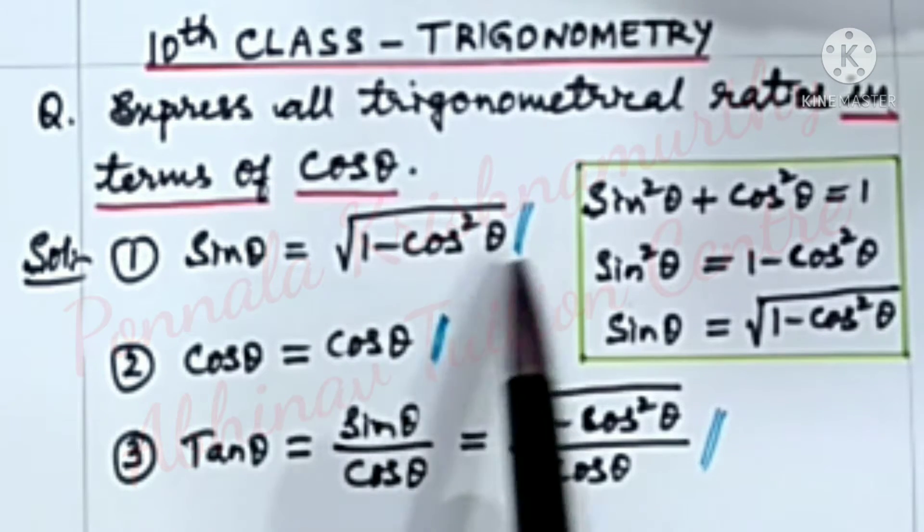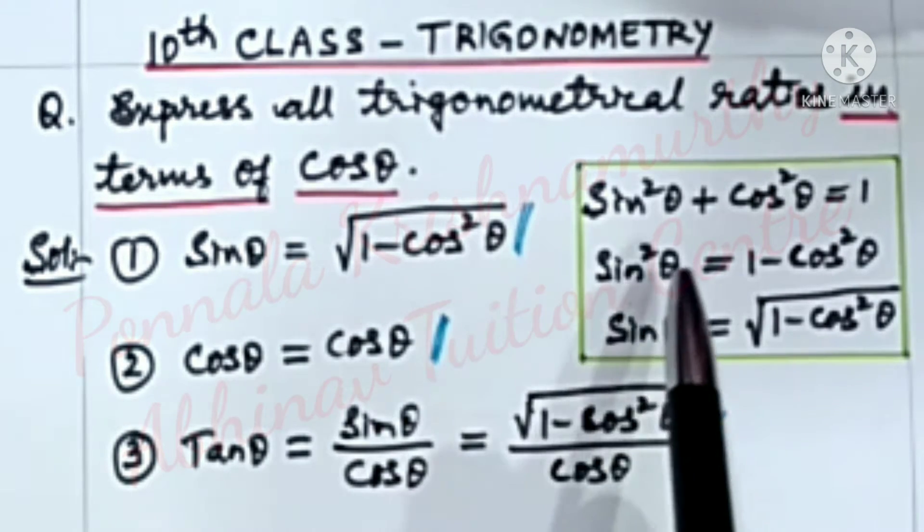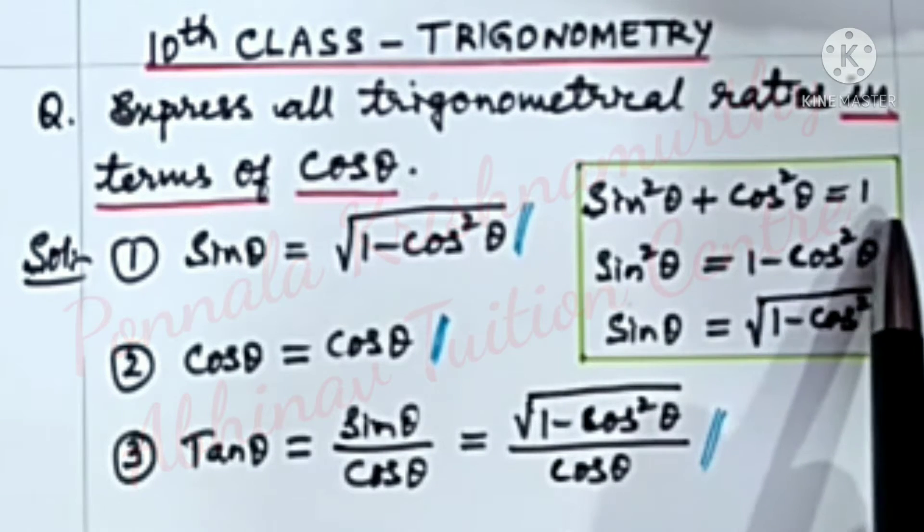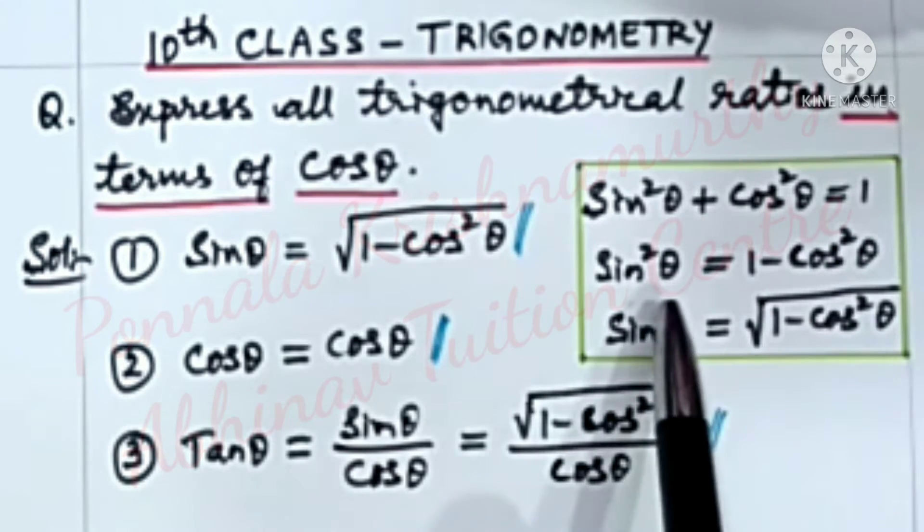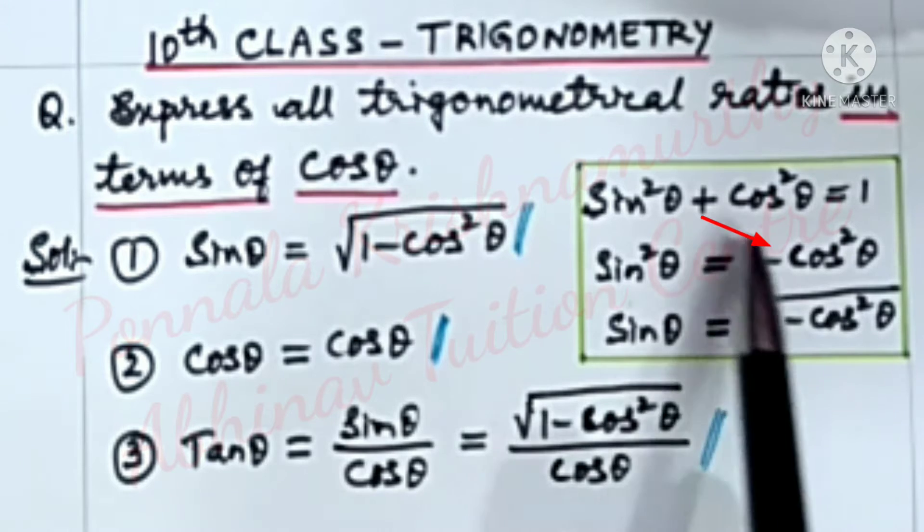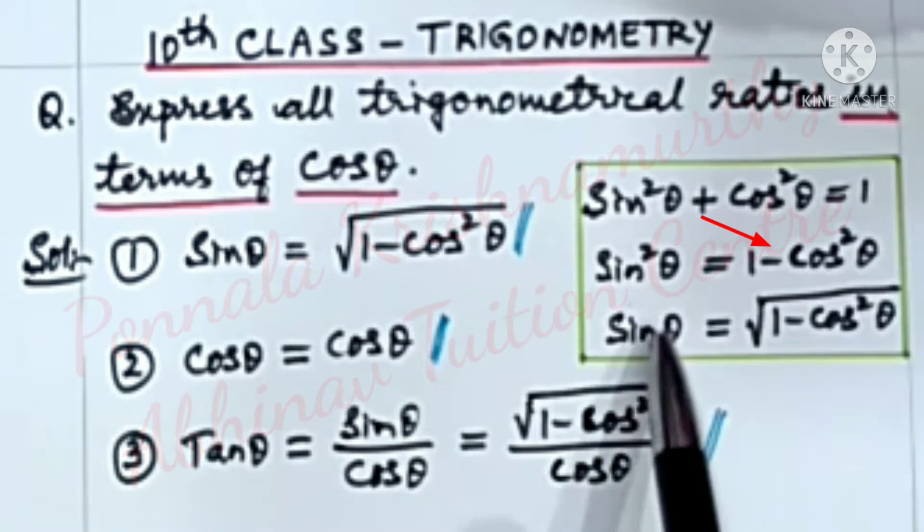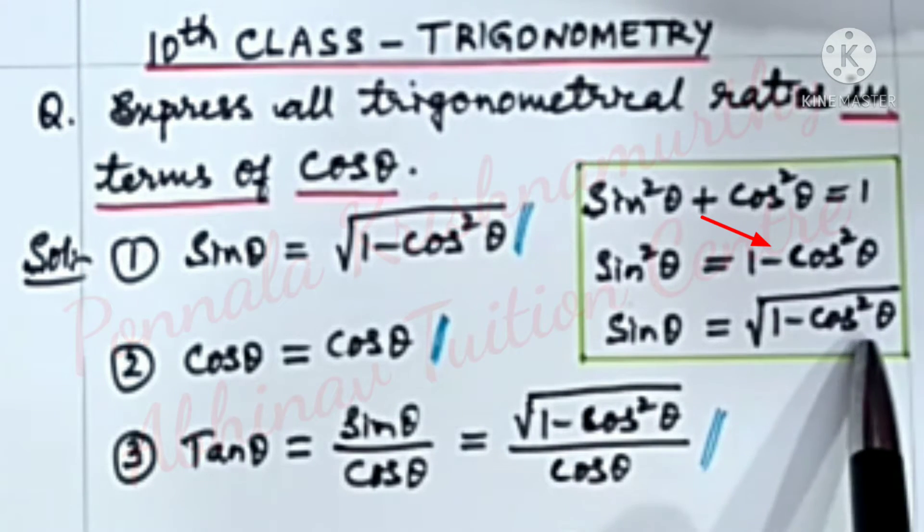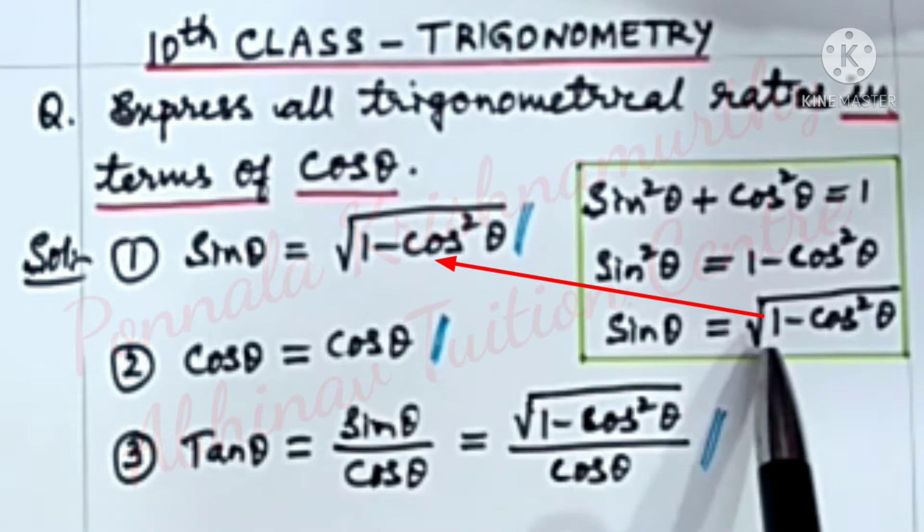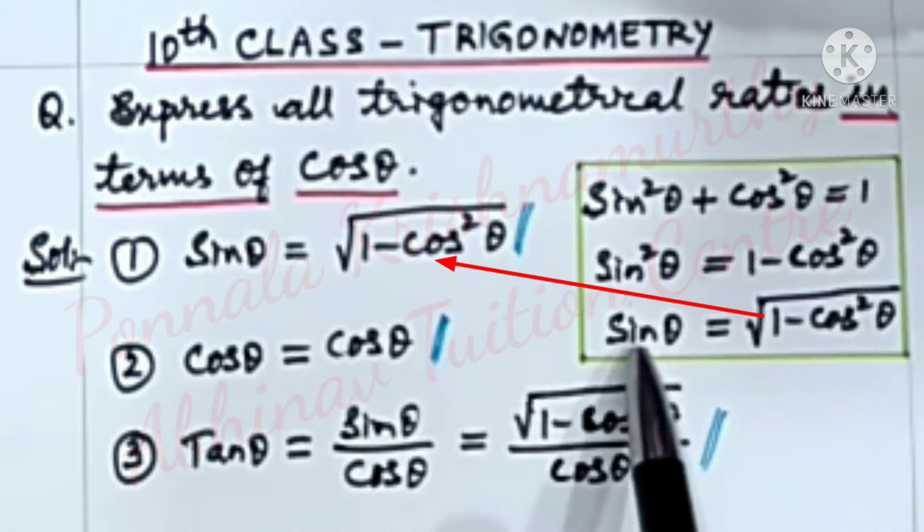sin theta is equal to under root 1 minus cos square theta. We know that sin square theta plus cos square theta is equal to 1. Sin square theta is equal to 1 minus cos square theta. Sin theta is equal to under root 1 minus cos square theta. So, we write under root 1 minus cos square theta in place of sin theta.